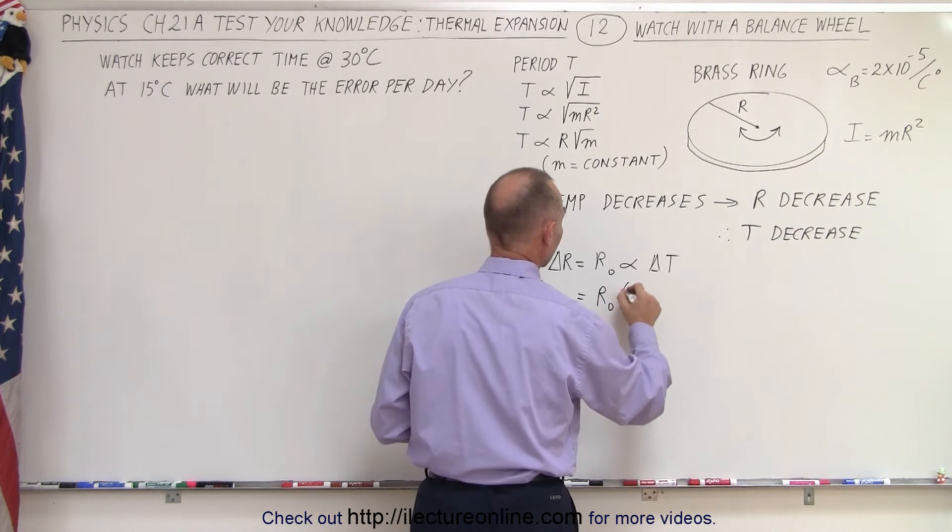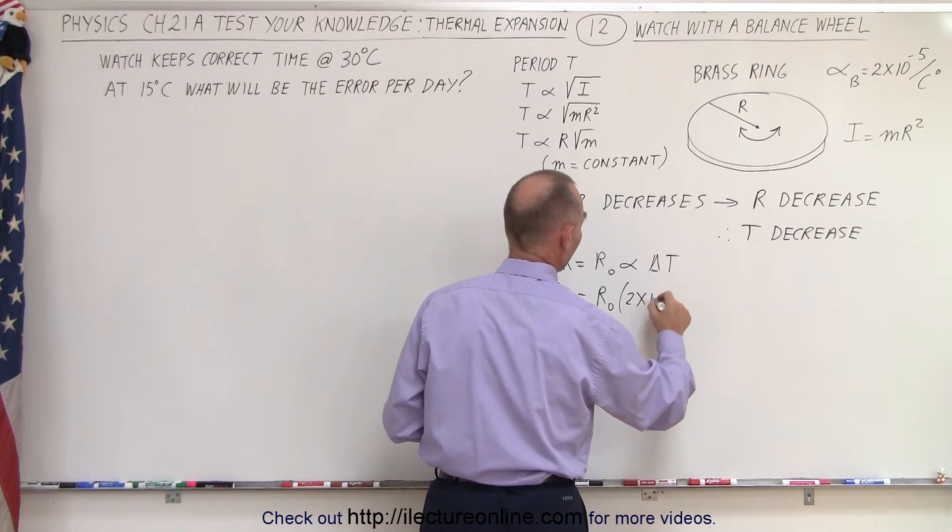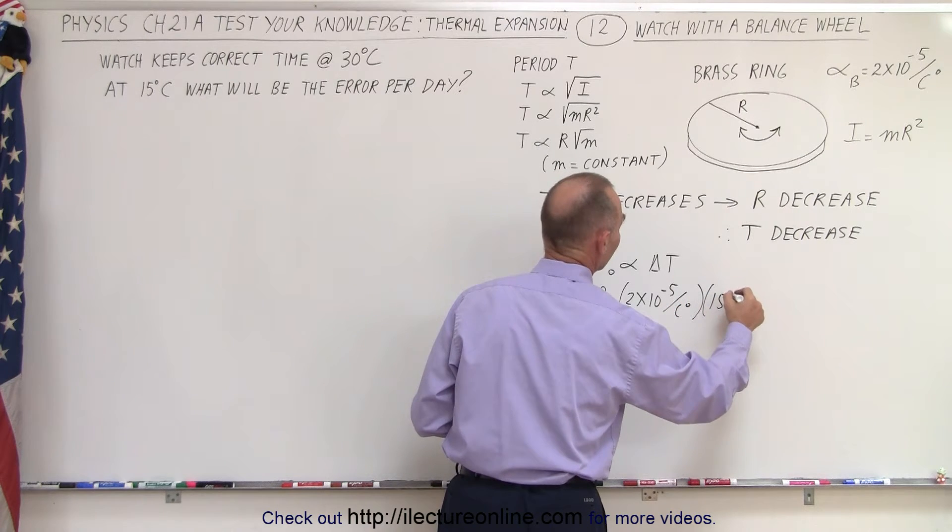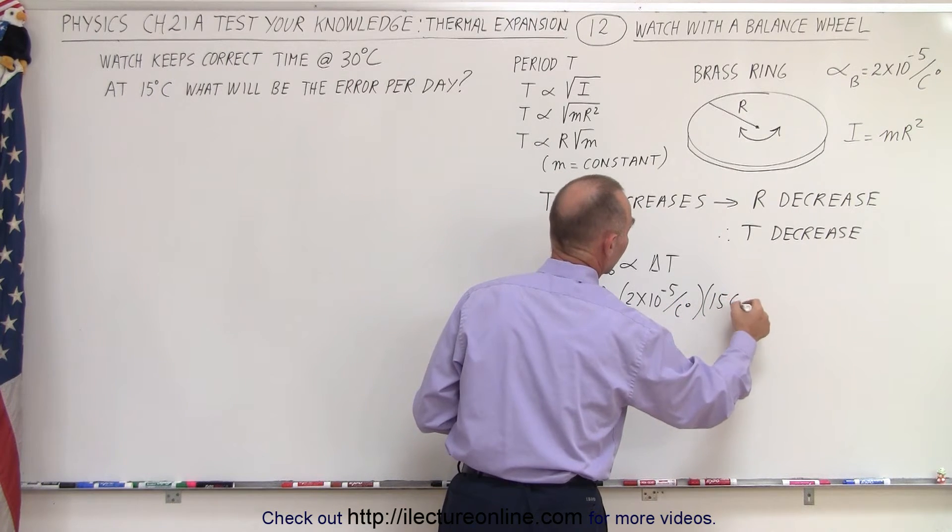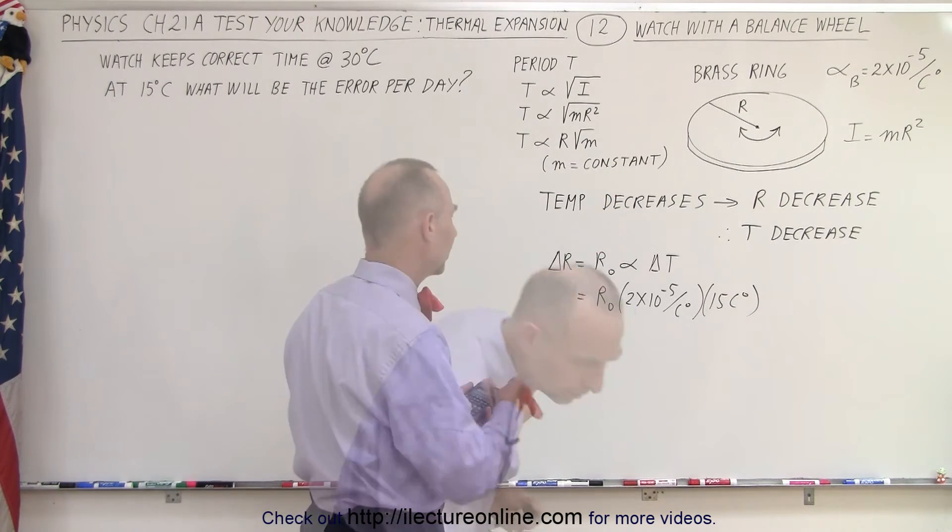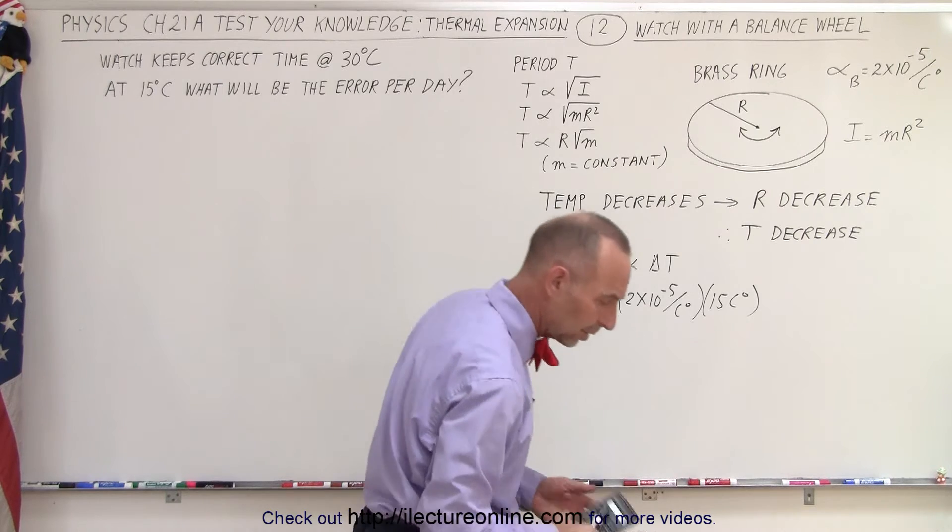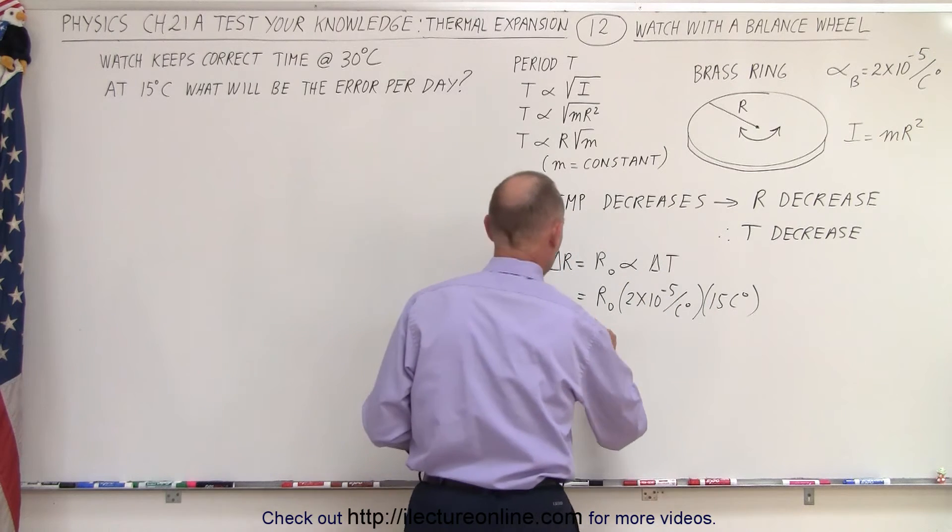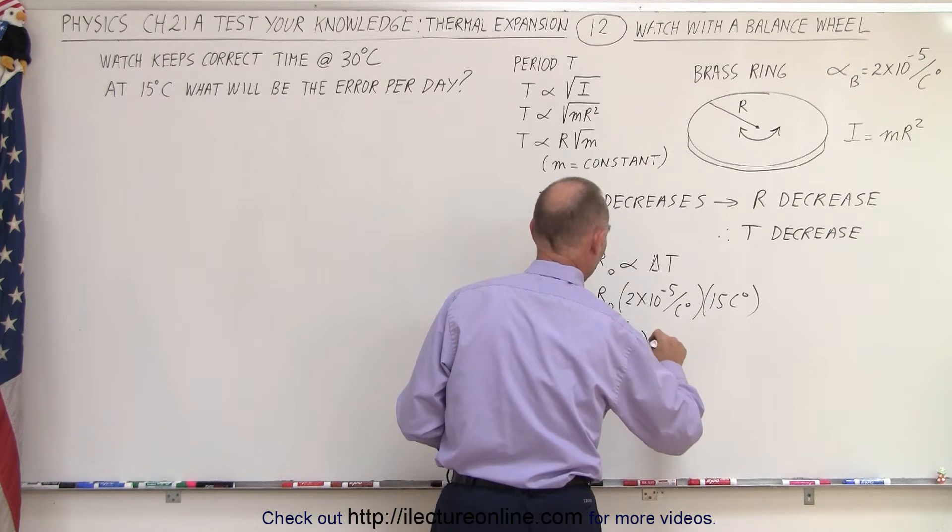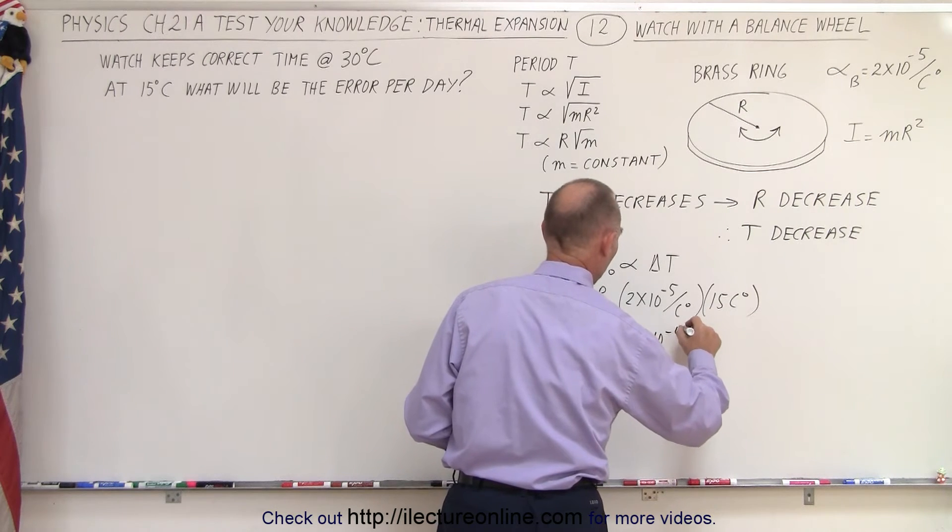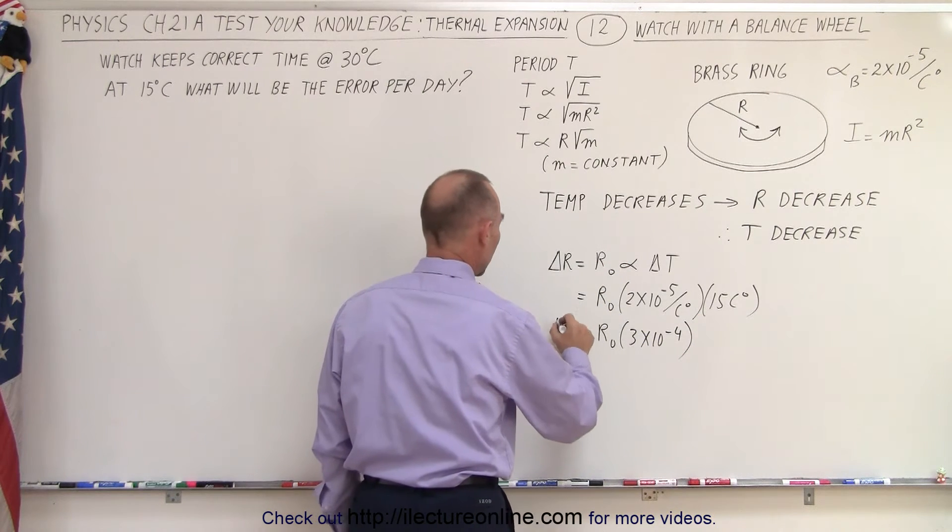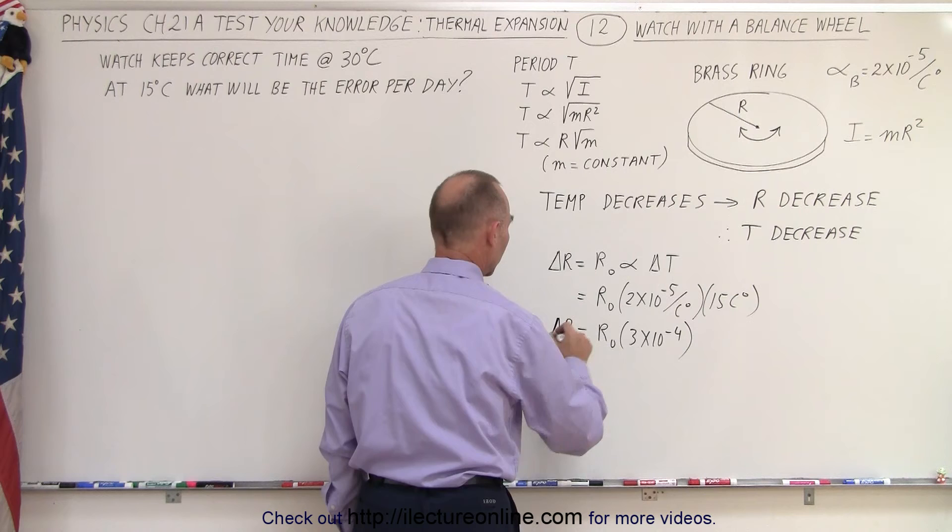So this would be equal to, well, whatever the original radius is, times 2×10⁻⁵ per centigrade degree, multiply times 15 centigrade degrees, because that's the delta between 15 and 30. Let's see here. That would be 3×10⁻⁴. So that would be equal to R initial times 3×10⁻⁴ R, and the centigrade degrees cancel out. So that would be the change in the radius.